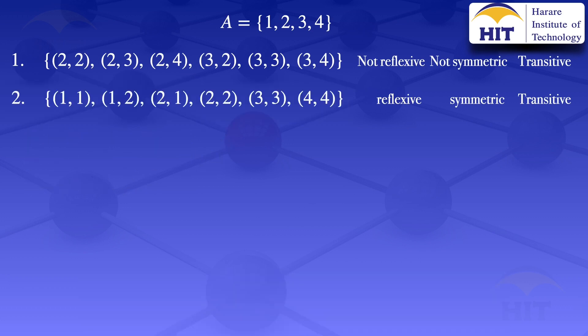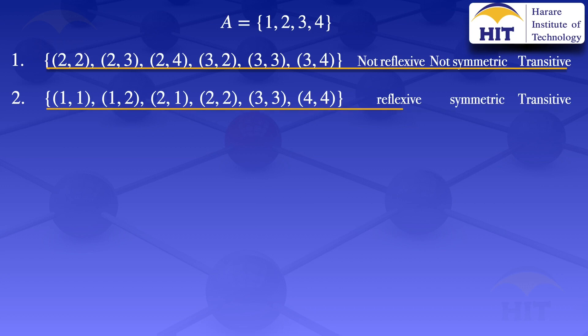So just a summary of what we have done: For the first relation — (2,2), (2,3), (2,4), (3,2), (3,3), (3,4) — that relation is not reflexive, not symmetric, but it is transitive. For the second relation — (1,1), (1,2), (2,1), (2,2), (3,3), (4,4) — that relation is reflexive, symmetric, and transitive. Because it is reflexive, symmetric, and transitive, that relation is said to be an equivalence relation.